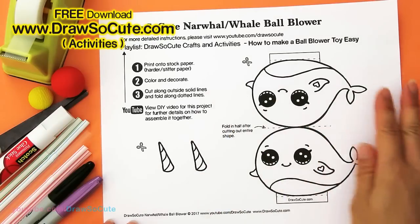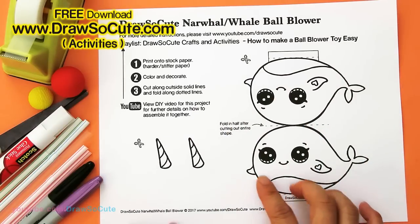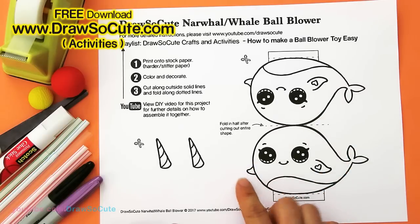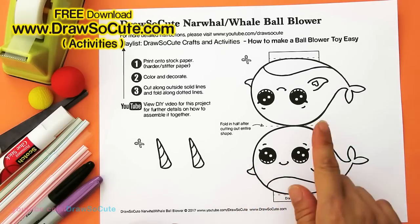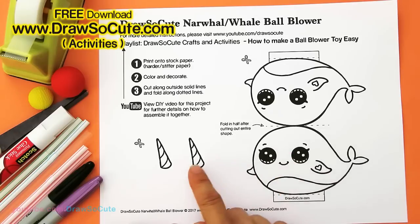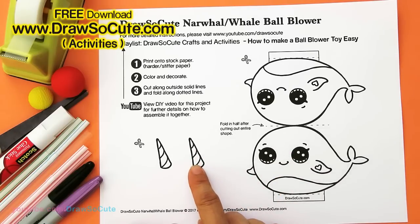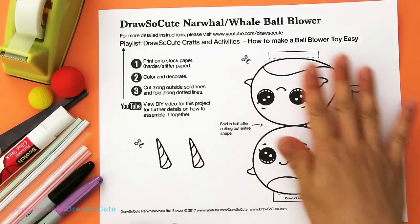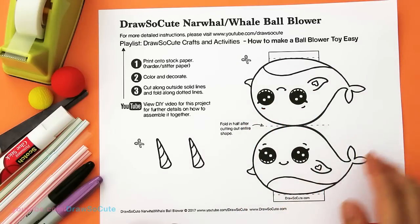So after you have it printed out, the first thing you need to do is to color it so that you don't have to worry about going outside the lines. And if you wanted to make it a narwhal, you can just go ahead and color the horns too. But if you want to keep it a whale, then just color this and cut just this part out.